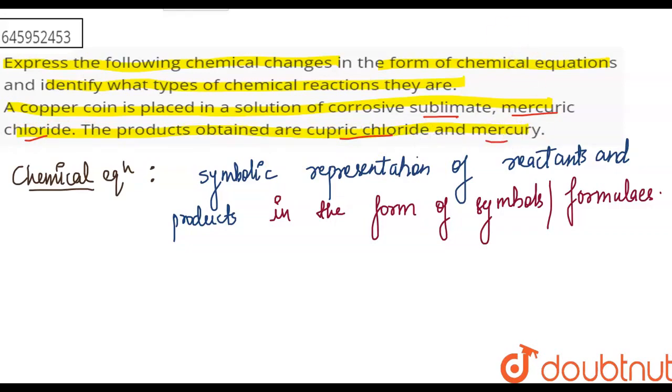Here, we are going to write the chemical equation and identify the reactants. You have copper coin added to mercuric chloride, which is HgCl2. Now, let's see. From here, we will work it out.